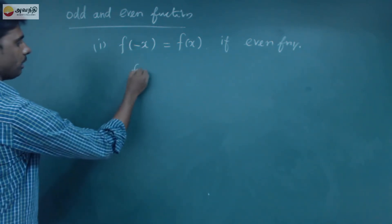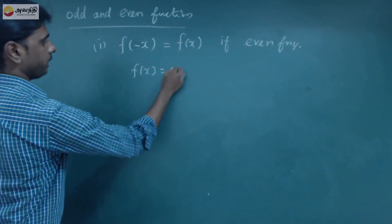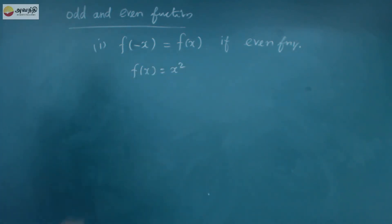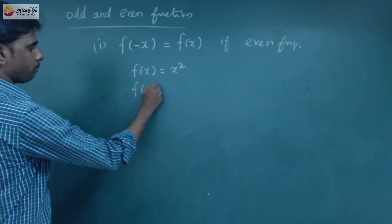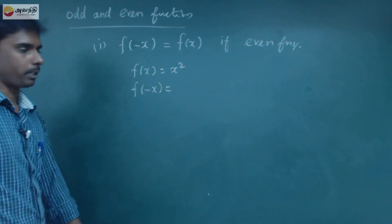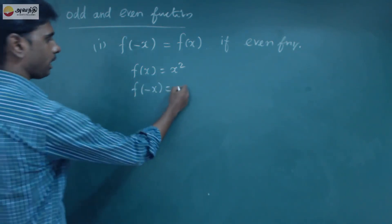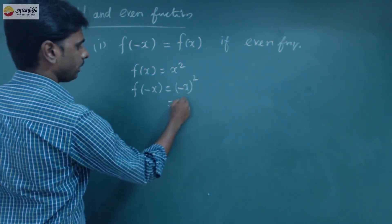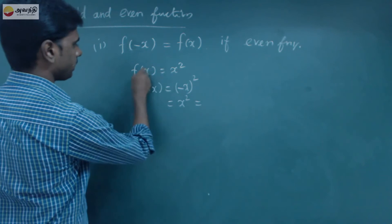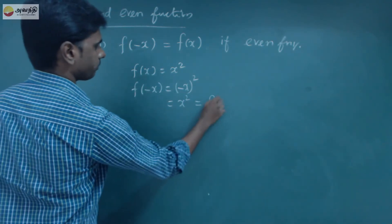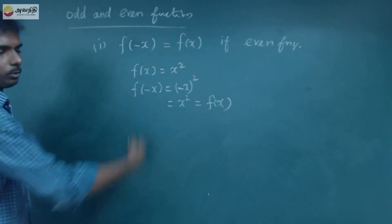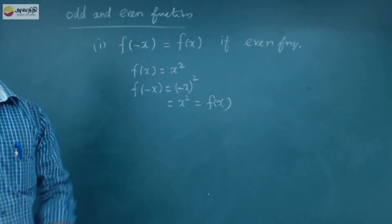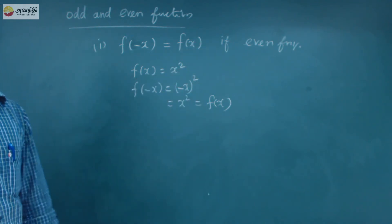For example, f of x is equal to x squared. In this function, we substitute x with minus x. It means minus x whole squared, which equals x squared, which is f of x. So if we substitute a negative value, we still get a positive function — that is an even function.